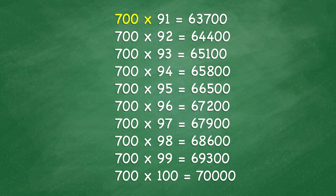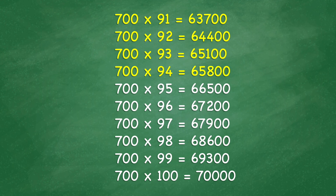700 times 91 equals 63,700. 700 times 92 equals 64,400. 700 times 93 equals 65,100. 700 times 94 equals 65,800. 700 times 95 equals 66,500. 700 times 96 equals 67,200.